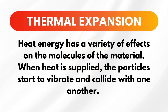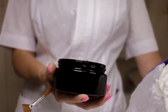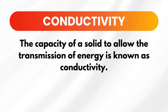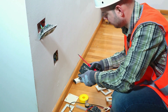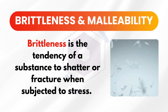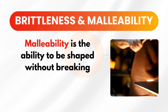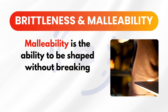Next is thermal expansion. When you heat a solid, its particles start to vibrate more vigorously. However, because the particles are so close together, this movement remains limited. A classic example is a metal lid on a jar — running hot water over the lid causes it to expand slightly, making it easier to open. Fourth is conductivity. Solids like copper and aluminum conduct electricity well because their particles allow easy transmission of energy. This is why copper wires are commonly used in electrical wiring. And last, we have brittleness and malleability. Brittleness is when a material shatters under stress — for example, a ceramic plate shatters when dropped. Malleability is the ability to be shaped without breaking, like when a blacksmith hammers a piece of metal into a sword.